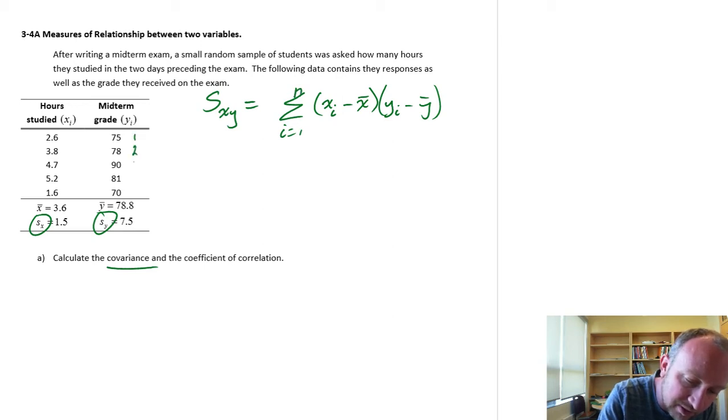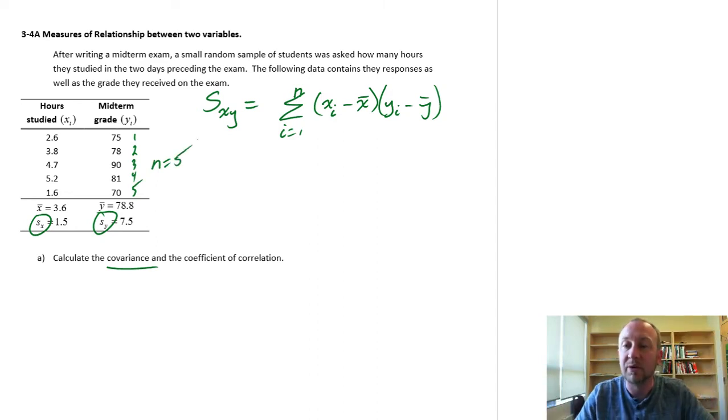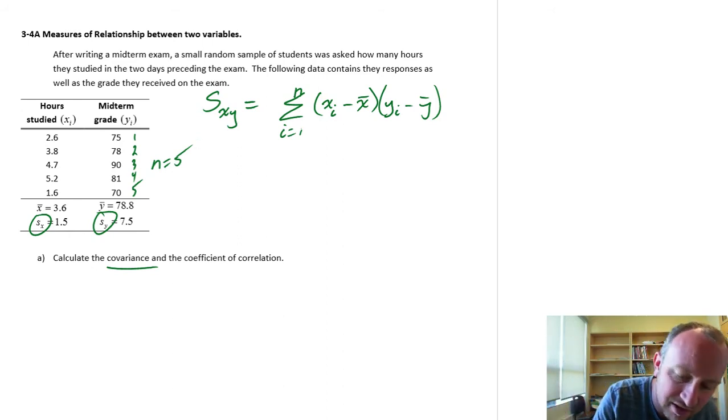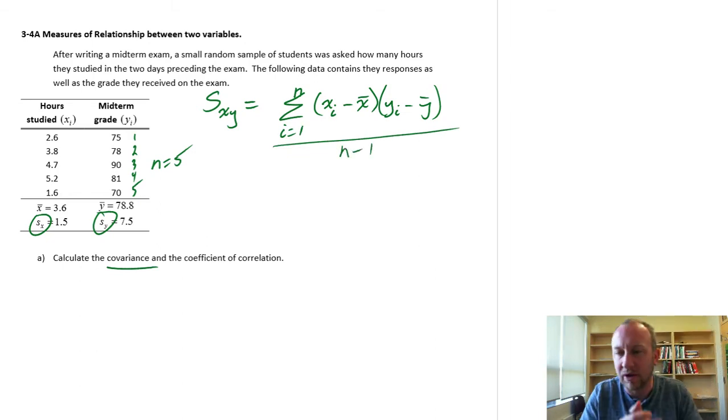So we're looking at the product of the deviations from the mean for each variable, and then we're adding all of these together. I equals 1 through N. Here I have 1, 2, 3, 4, 5. So N equals 5 observations. So now we're adding together the products of all of these deviations from the mean. Sounds tedious, I know. And then we divide it by N minus 1.